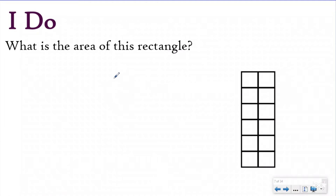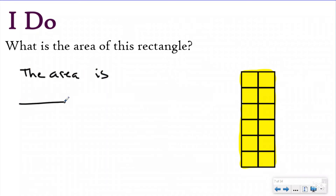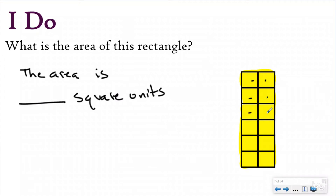Let's take a look at an 'I do' problem. I want to know what is the area of this rectangle — in other words, how many square units did I need to cover the entire rectangle? I'm going to write my statement: the area is blank square units, because I recognize that when I'm doing area, I'm covering it with square units. Now I count the unit squares: one, two, three, four, five, six, seven, eight, nine, ten, eleven, twelve. So the area of this rectangle is 12 square units.